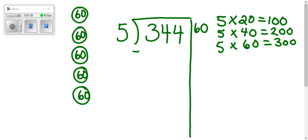That means that we have put away 300 llamas and there's only 44 llamas left. So then we do the whole step process all over again. We say, five times what will get me to exactly 44 or close to it? Use what you know.